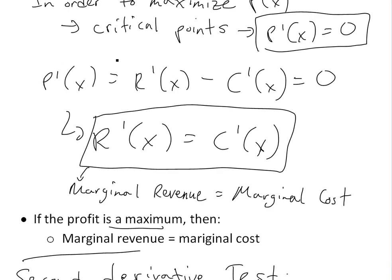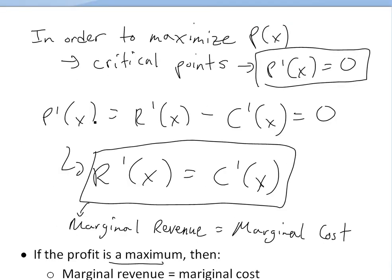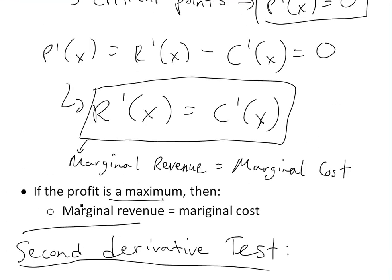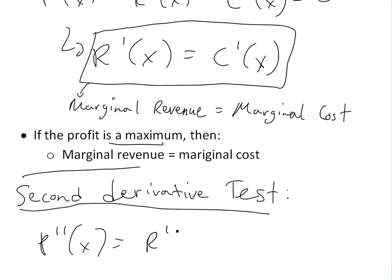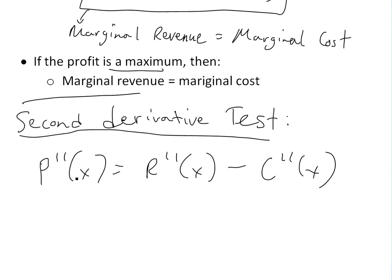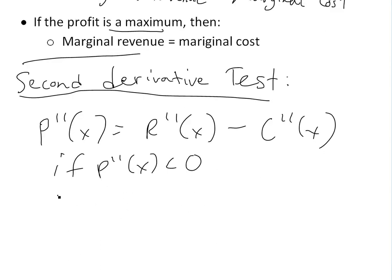We take the second derivative of the profit function. P double prime of X equals R double prime — the second derivative of revenue — minus the second derivative of cost. If this is less than zero, then we're concaving down, so the critical point is a maximum. That's basically how we use the second derivative test: if P double prime of X is less than zero, then it's concave down and the critical point is a max.